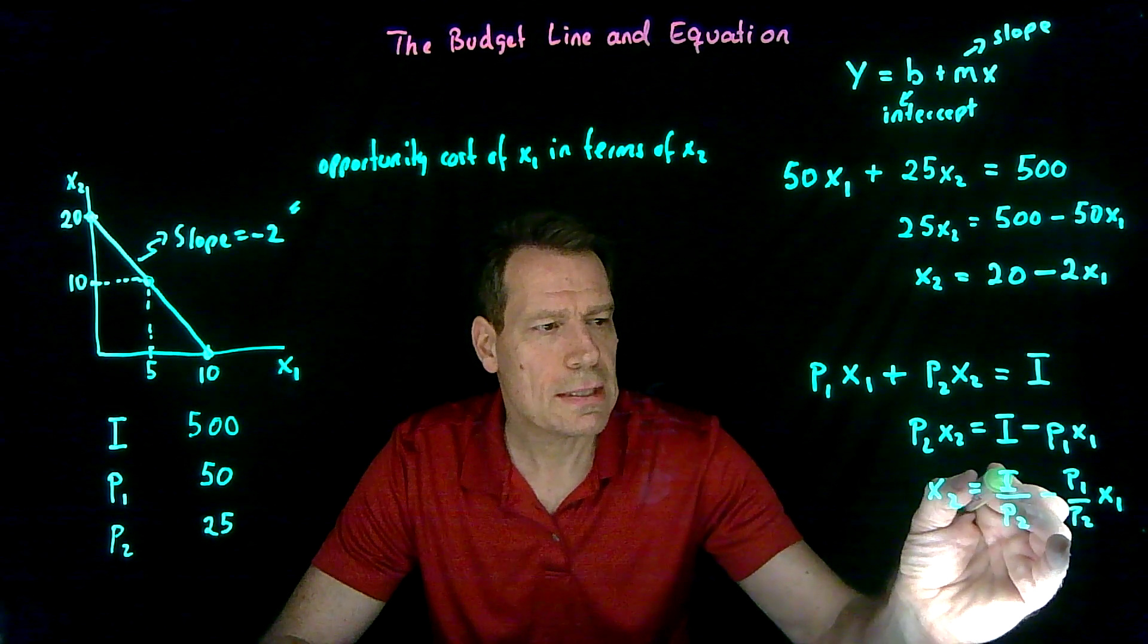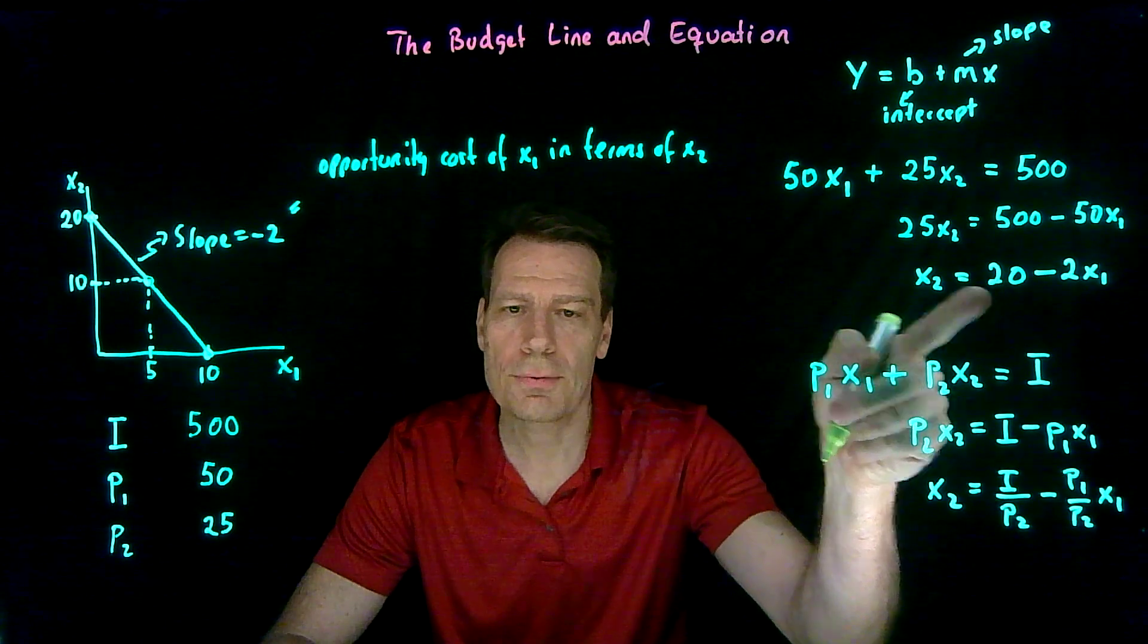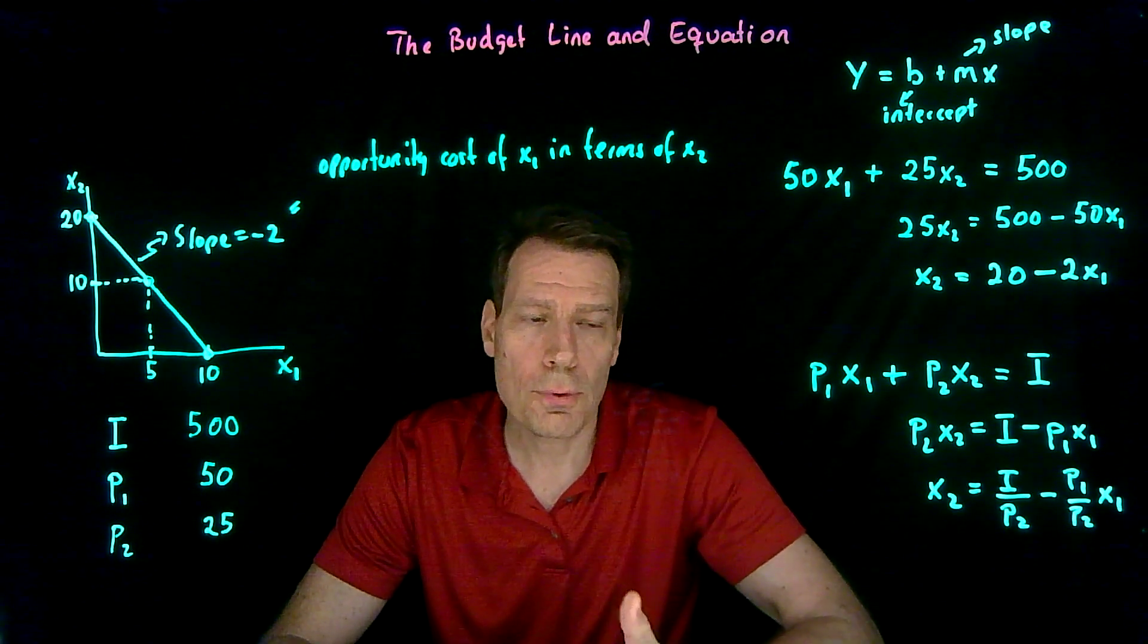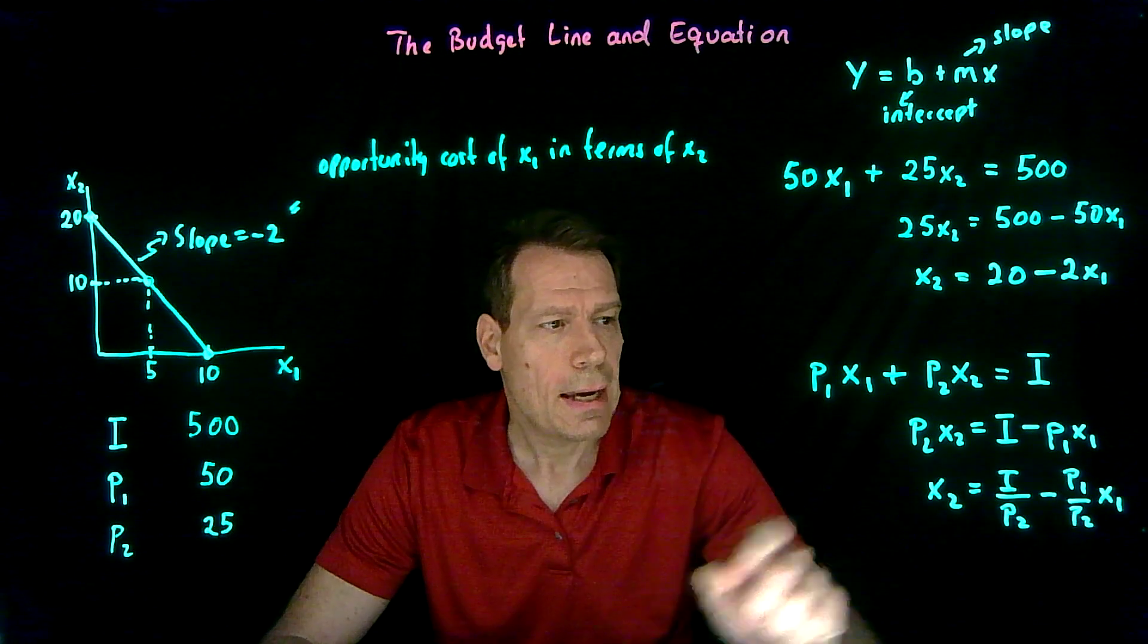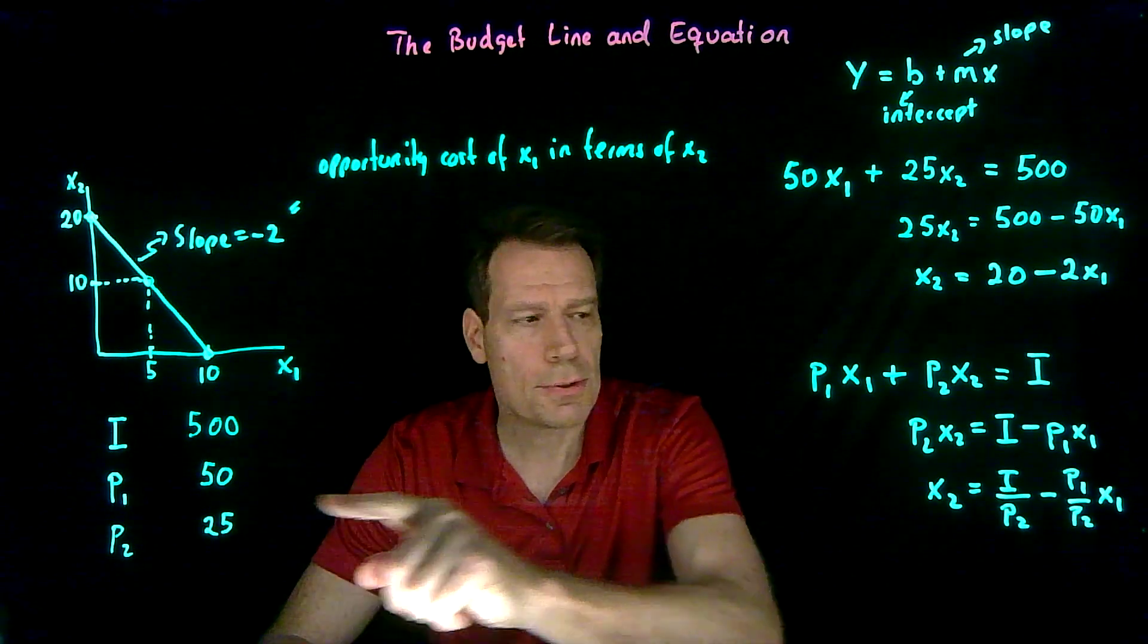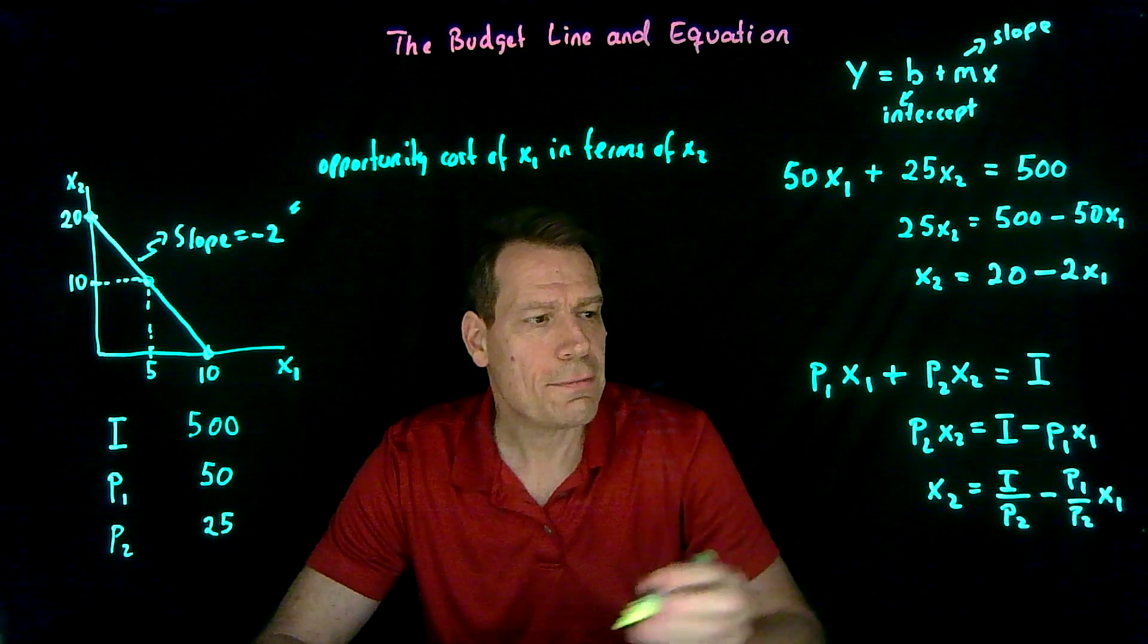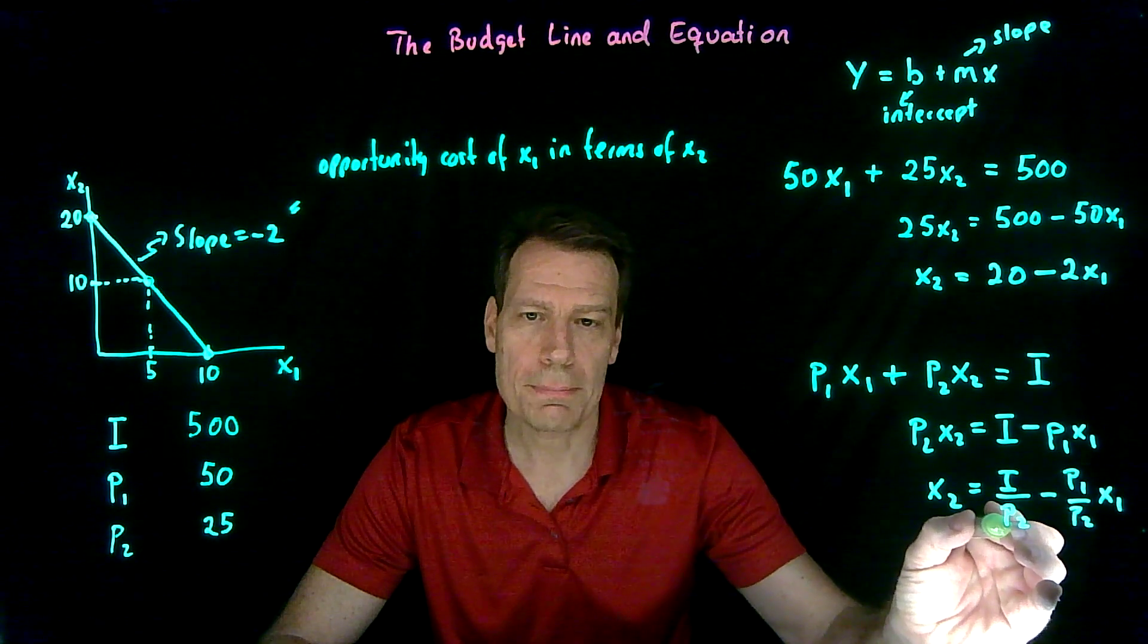So we now have an intercept of income divided by p2. In this case it was 500 divided by 25 which gives us that 20. And it makes sense that that should be the y-intercept, the x2 intercept. If all we buy is the good x2, then we're going to be able to afford your income divided by the price of good 2. That's how we got that 20. And the slope is minus p1 over p2. p1 in this case is 50, p2 is 25, so that gives us our negative 2 slope. That gives us the opportunity cost of buying the good x1 in terms of x2. So we have here the opportunity cost of buying x1 and here we have the intercept of the budget line.